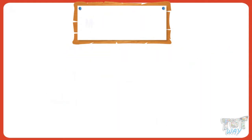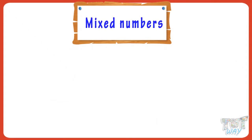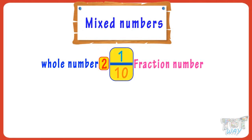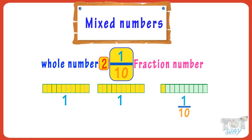Mixed numbers. Now let's learn what are mixed numbers. This is an example of a mixed number. We have a whole number part, which is 2, and a fraction part, which is 1 by 10 here. It says that there are two whole things and a fraction that is part of a whole.